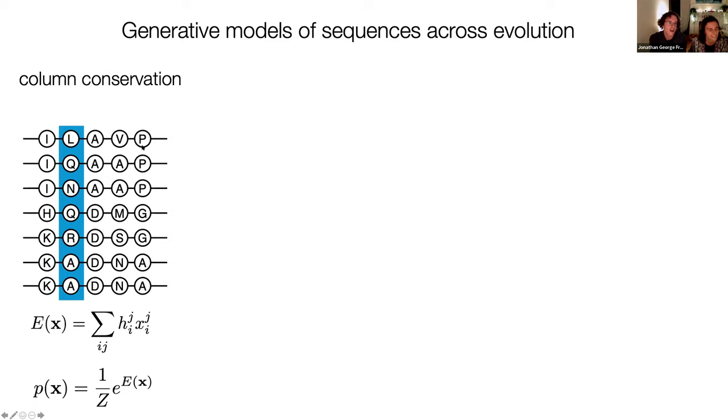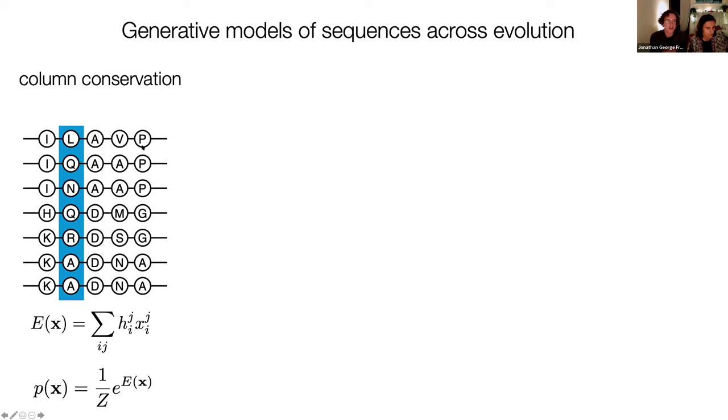So just to explore this idea in a bit more detail, we can start with pretty much the simplest model you can write down, which is going back to this idea of column conservation. As Mafalda mentioned, this has a long history. We've got this intuition that if we see a multiple sequence alignment, and there's an amino acid at a particular position that is highly conserved across distinct organisms, then if we change that amino acid for a very different amino acid, it's likely to disrupt the function of the protein.